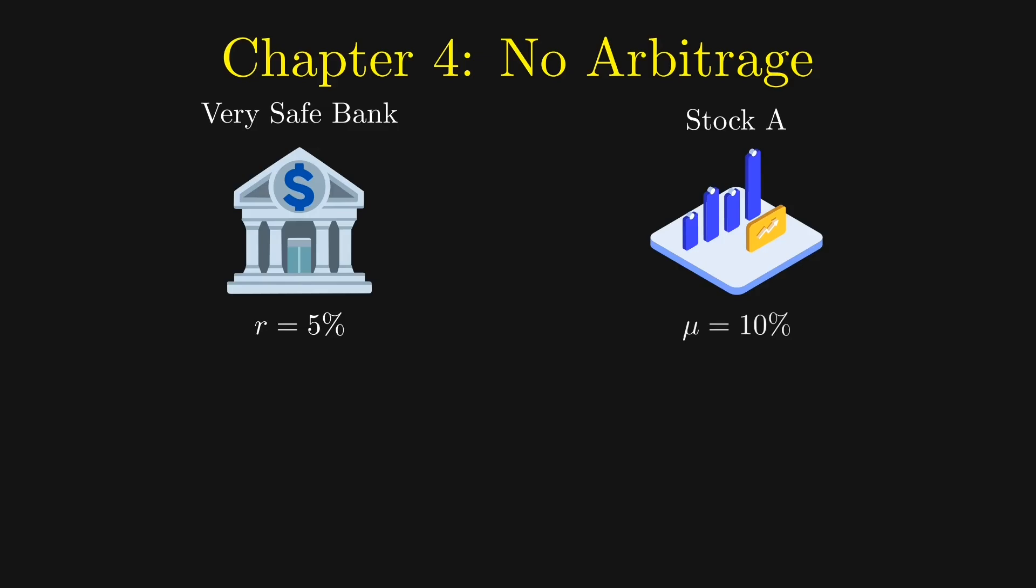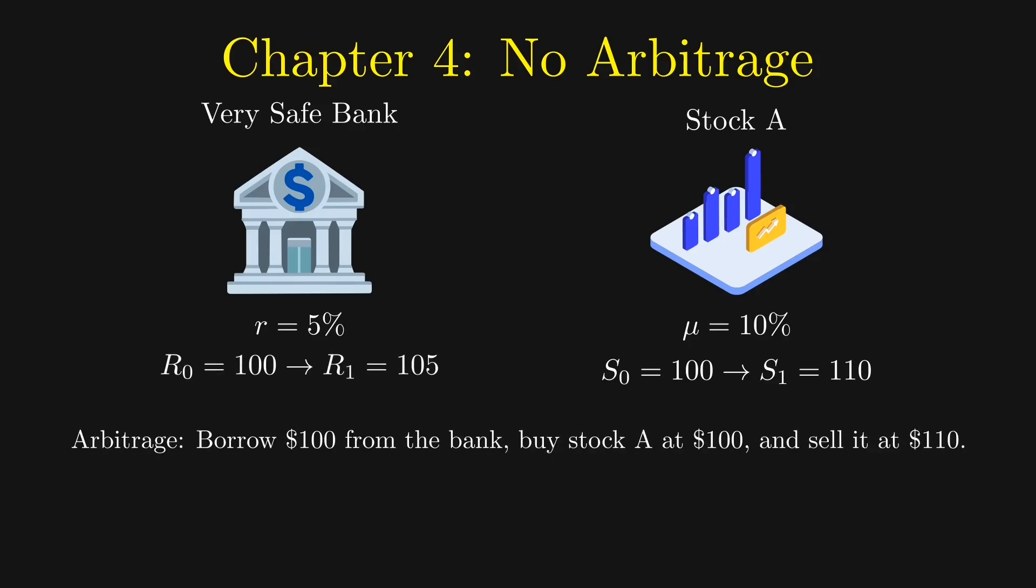Stock A trades for $100 and is expected to grow to $110 next year. An arbitrage opportunity exists because we can borrow $100 from the bank at 5%, invest in stock A, get $110 at the end of the year, and repay $105 to the bank. We profit $5 as a result. Is this arbitrage? Actually, no.